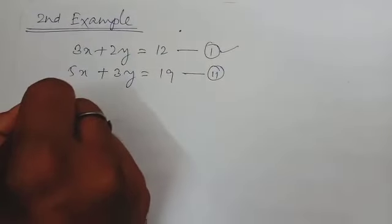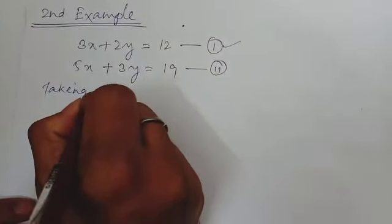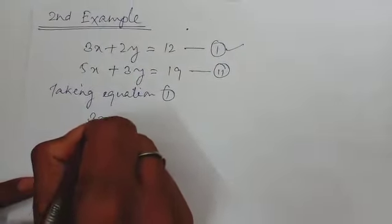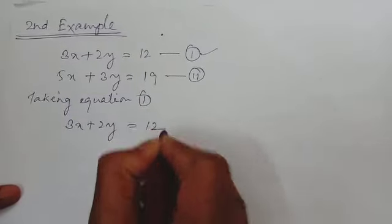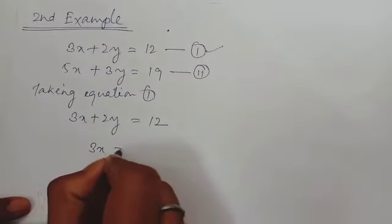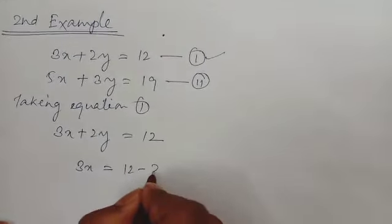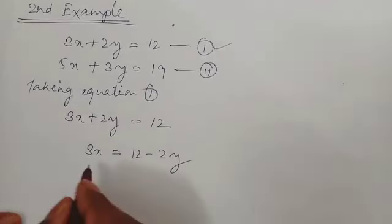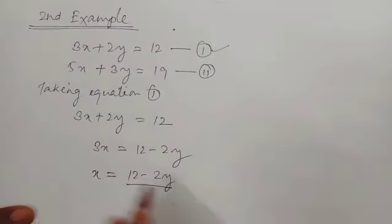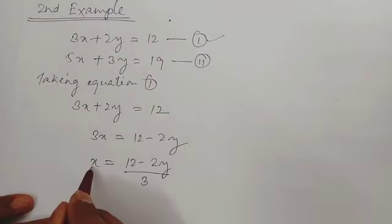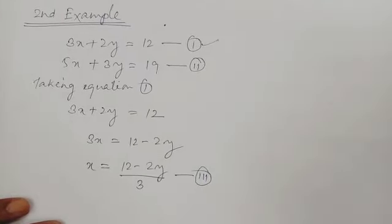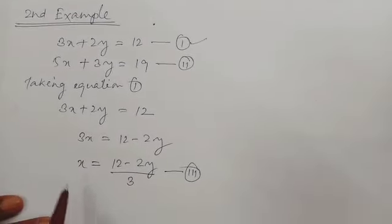Taking equation 1: 3x plus 2y equal to 12. Simplifying: 3x equal to 12 minus 2y, transposing 2y to the right-hand side. So x equal to 12 minus 2y divided by 3. Take this as equation 3. We have derived the value of x from equation 1.